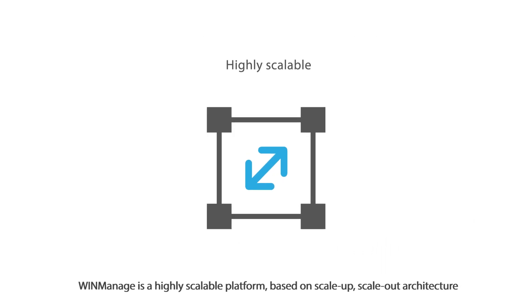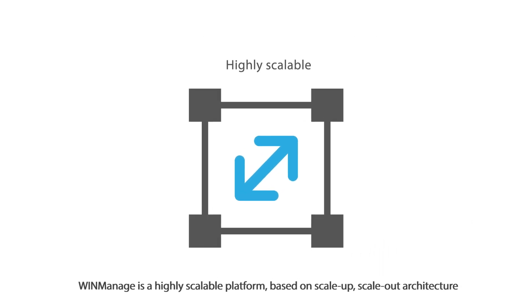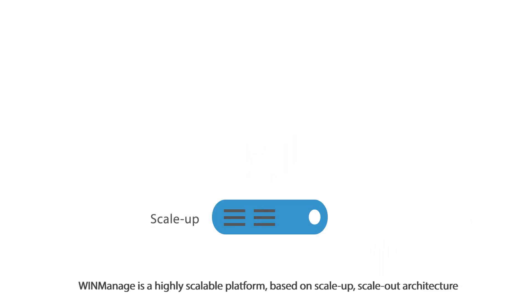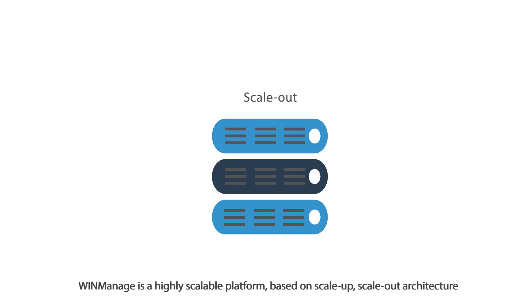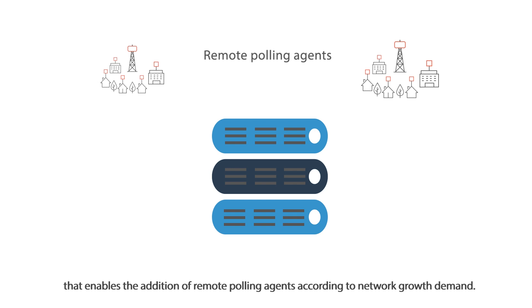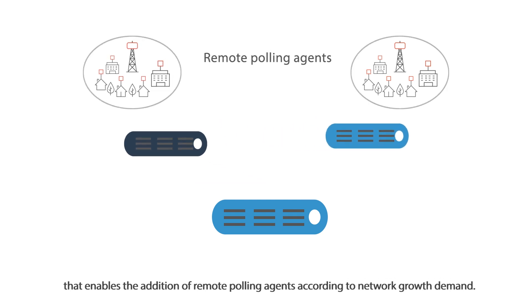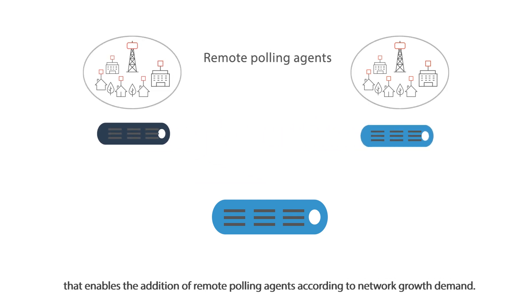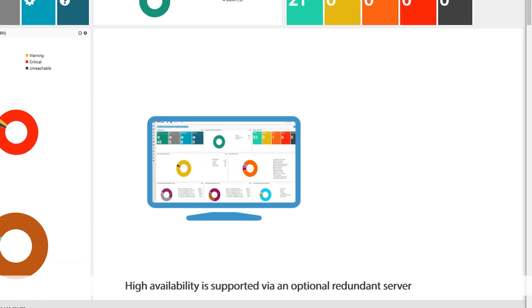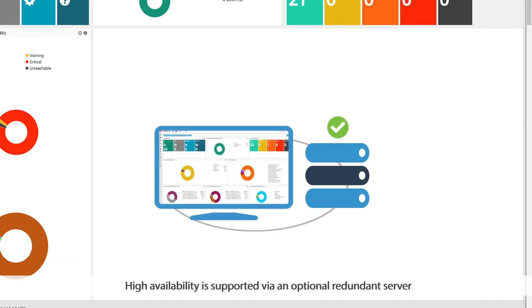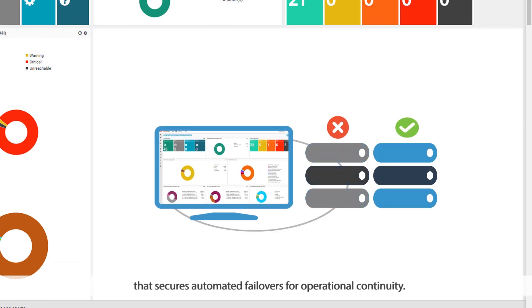WinManage is a highly scalable platform based on scale-up, scale-out architecture that enables the addition of remote polling agents according to network growth demand. High availability is supported via an optional redundant server that secures automated failovers for operational continuity.